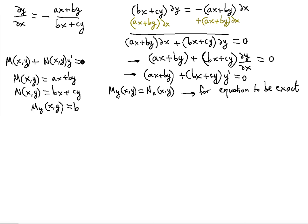Now does that equal the partial derivative of N with respect to x? The partial derivative of N = bx + cy with respect to x: the derivative of bx is b, and cy is constant so it becomes zero. So ∂N/∂x = b as well. Indeed, we have an exact equation, because both partial derivatives equal b.